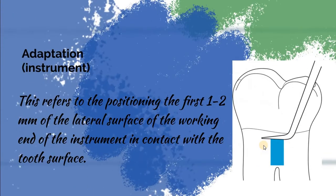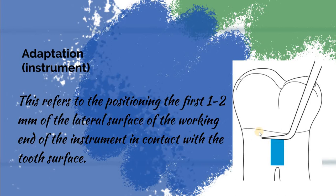The term adaptation is the placing of one to two millimeters of the active end of the instrument on the tooth surface, using each lateral side of the instrument. The process of placing the instrument on the tooth surface is called adaptation, which we use in instrumentation — adapting one to two millimeters of the lateral surface of the instrument in contact with the tooth surface.